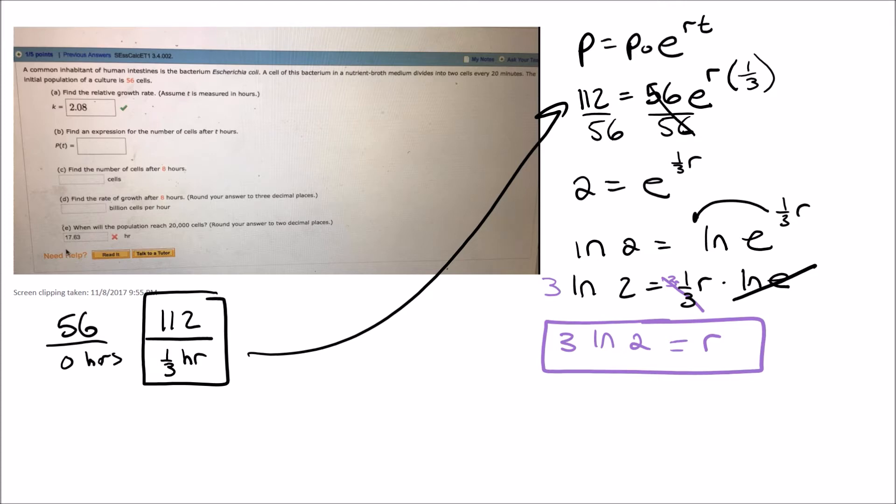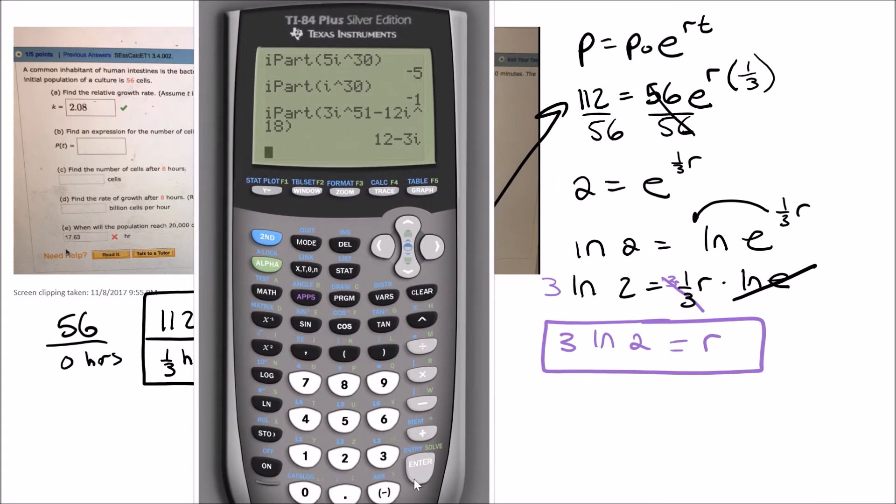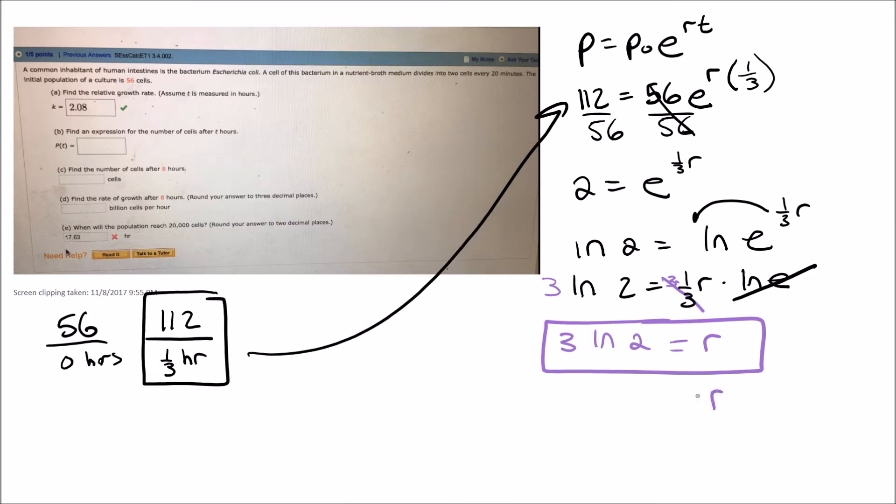And that's our growth rate. And if you were to do this out, let me pull up the calculator. So we had 3 ln of 2. So if I type in 3 times the ln of 2, that comes out to be 2.079, which is the 2.08 that you got there. So r is that 2.08, but the exact answer is 3 ln of 2.